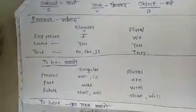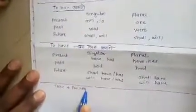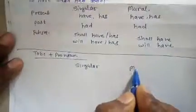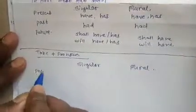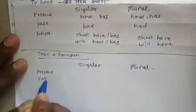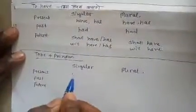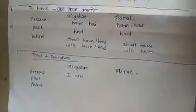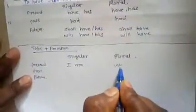It's singular. The pronoun is singular and plural. Present tense — singular pronoun is I. The pronoun is I. Plural, present tense: we are.